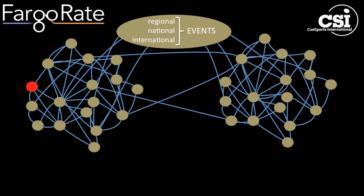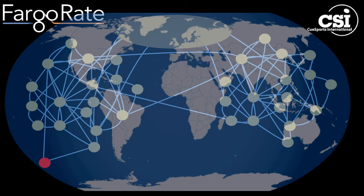So the player here on the left, in say Tulsa, Oklahoma, is thoroughly coupled to another player in, say, Providence, Rhode Island. And when a new player enters and plays a few match-ups, he or she is immediately coupled to the whole world.